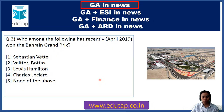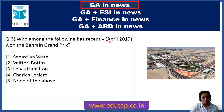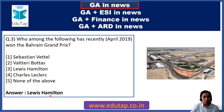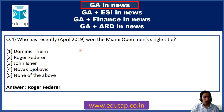Question 3: Who among the following has recently won the Bahrain Grand Prix? This also took place in April. The answer is option 3, Lewis Hamilton. So Lewis Hamilton has won the Bahrain Grand Prix Championship.